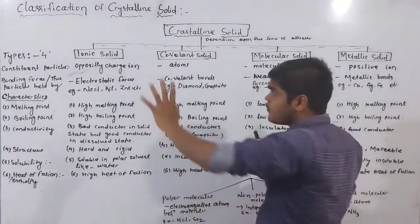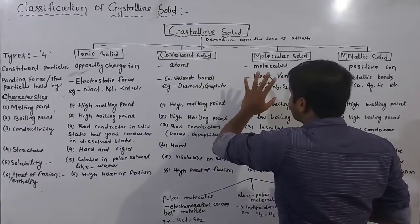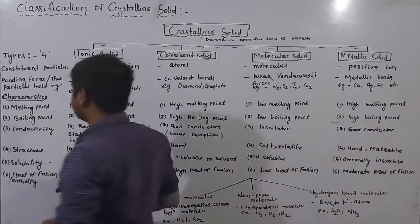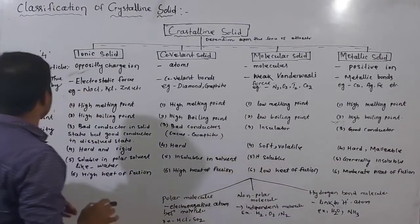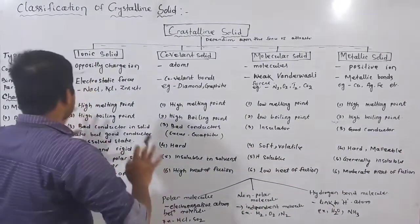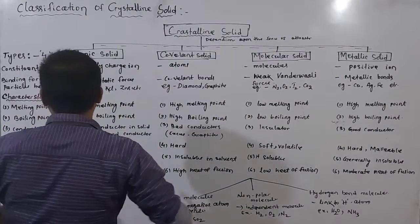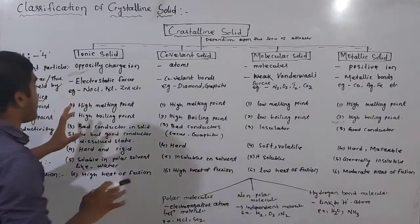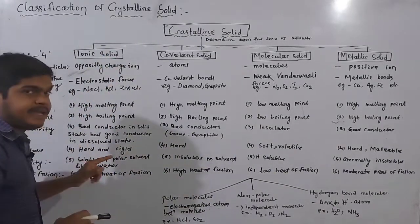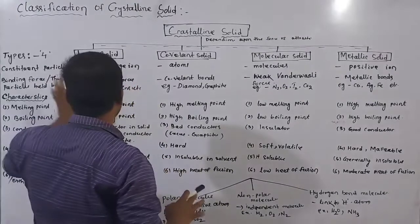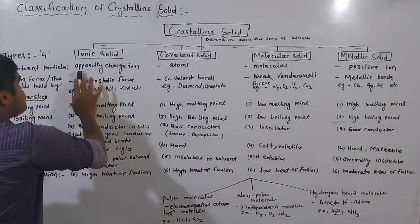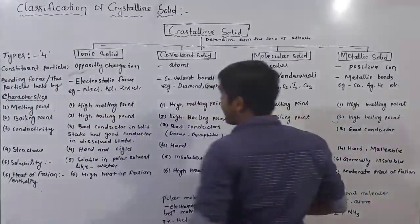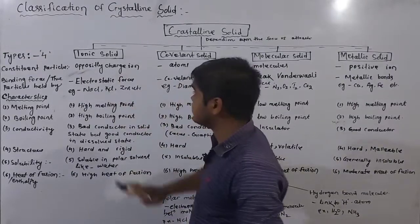The force of attraction is different for each type. The constituent particle of ionic solid is oppositely charged ions — positive charge ions or negative charge ions.